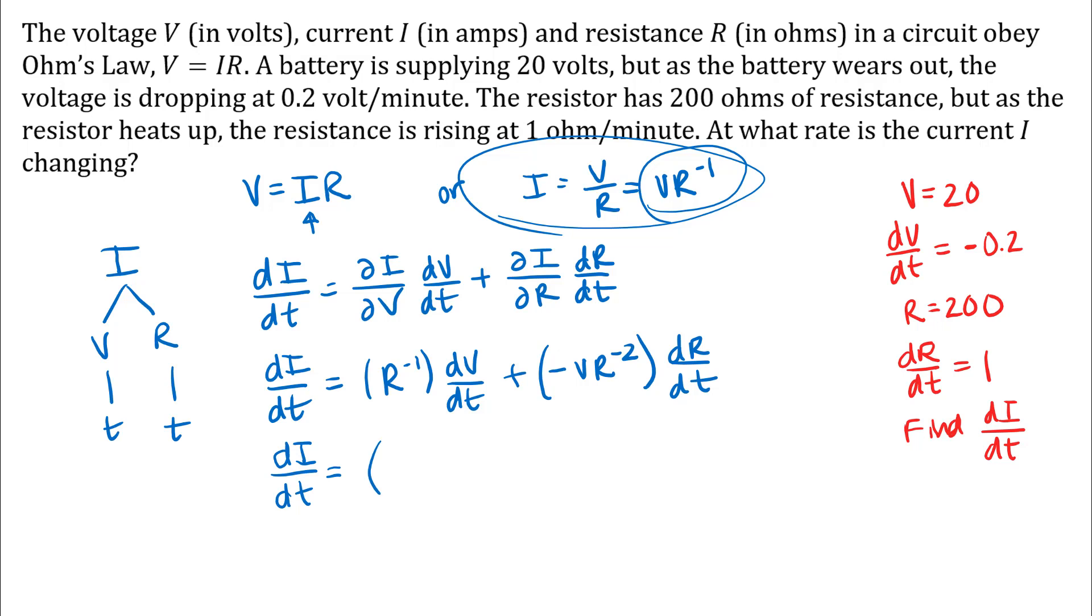Alright, so R to the negative 1 or 1 over R, we'll have 1 over 200. dV/dt was negative 0.2. Here we'll have negative V, so negative 20 over R squared, over 200 squared. And then dR/dt was 1. So from here, it's just a matter of doing some little calculations.